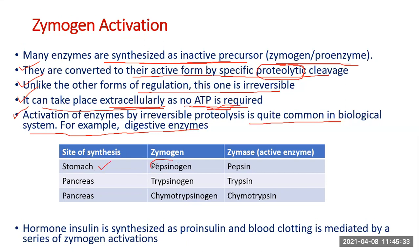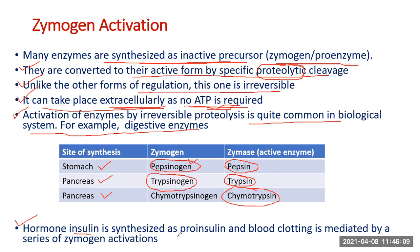This conversion takes place only once in the lifetime of an enzyme. For example, pepsinogen is synthesized as an inactive precursor in the stomach and is converted to its active form pepsin. Trypsinogen is synthesized in the pancreas and converted to trypsin by proteolytic cleavage. Chymotrypsinogen, also from the pancreas, is converted to chymotrypsin. Similarly, proinsulin is the precursor to insulin, and blood clotting factors are also activated by a series of zymogen activations.